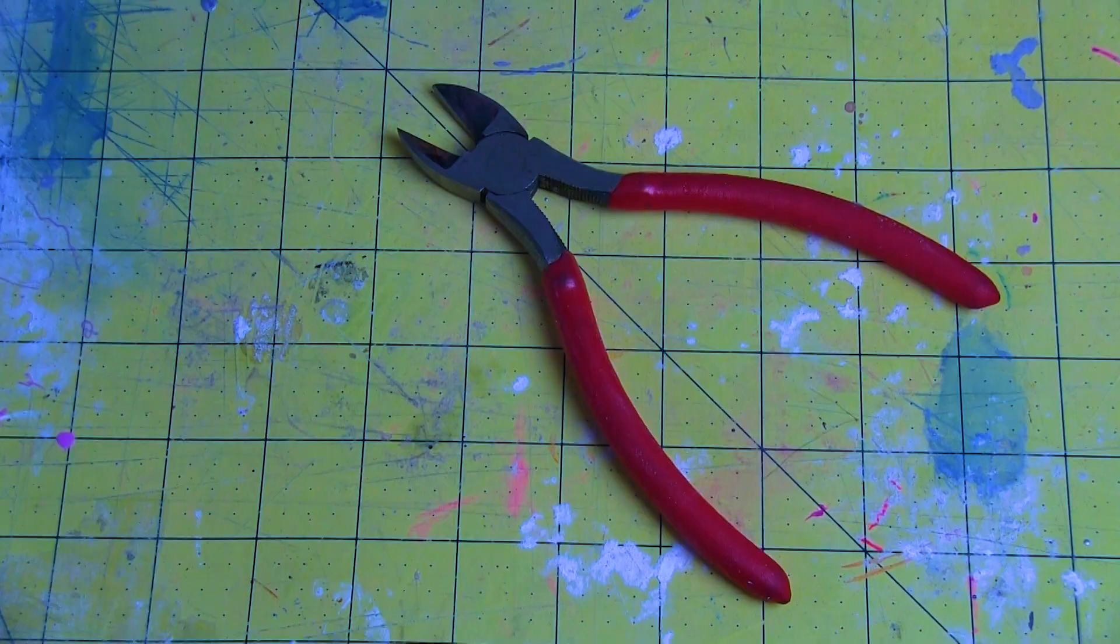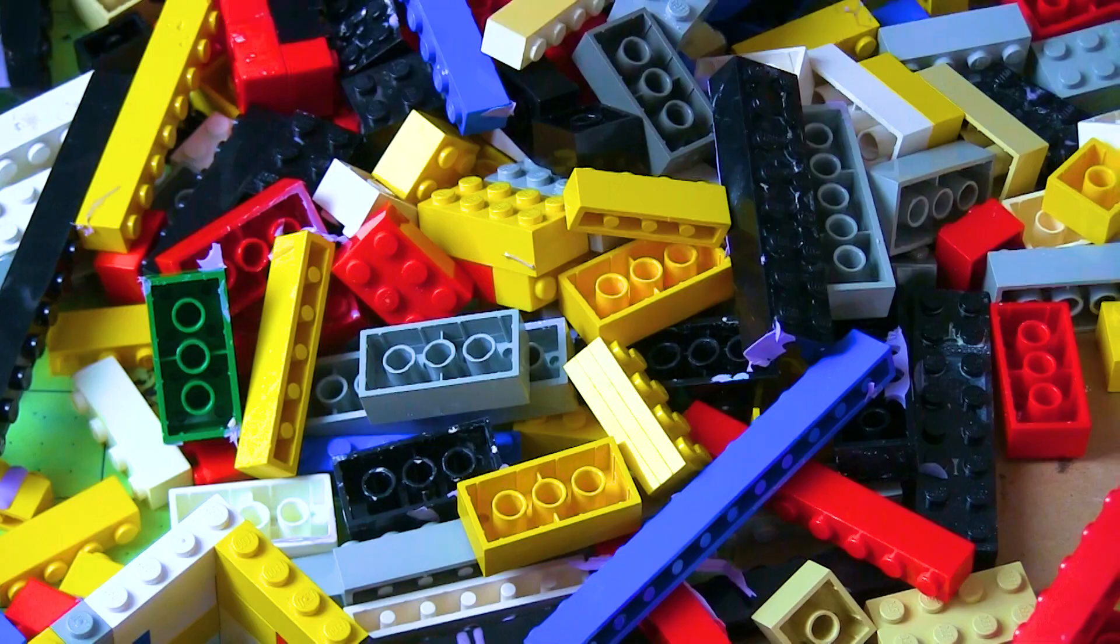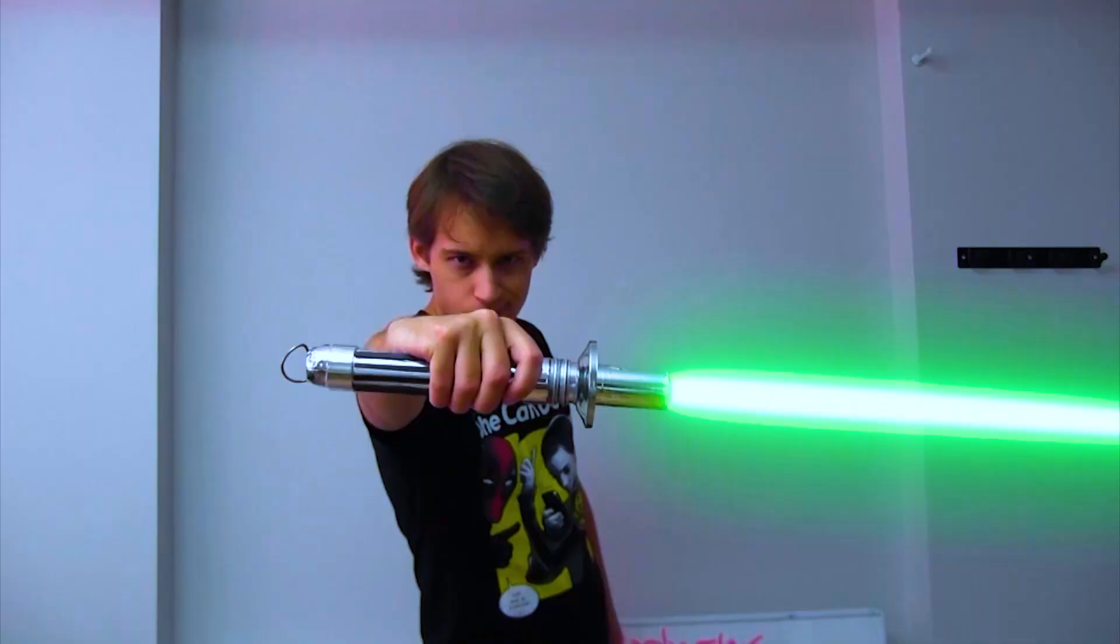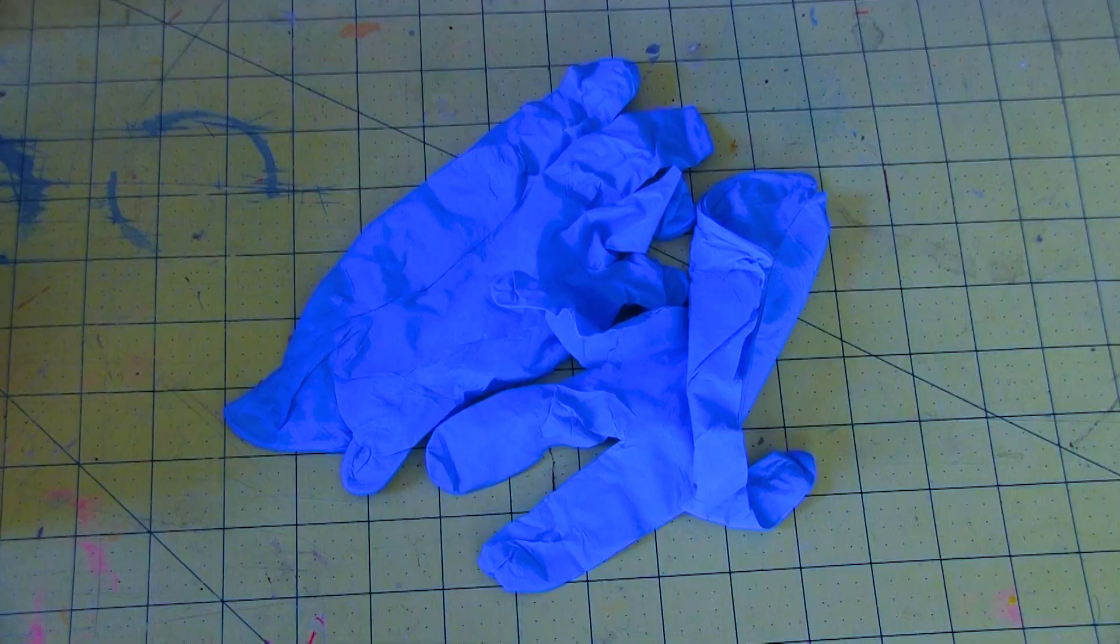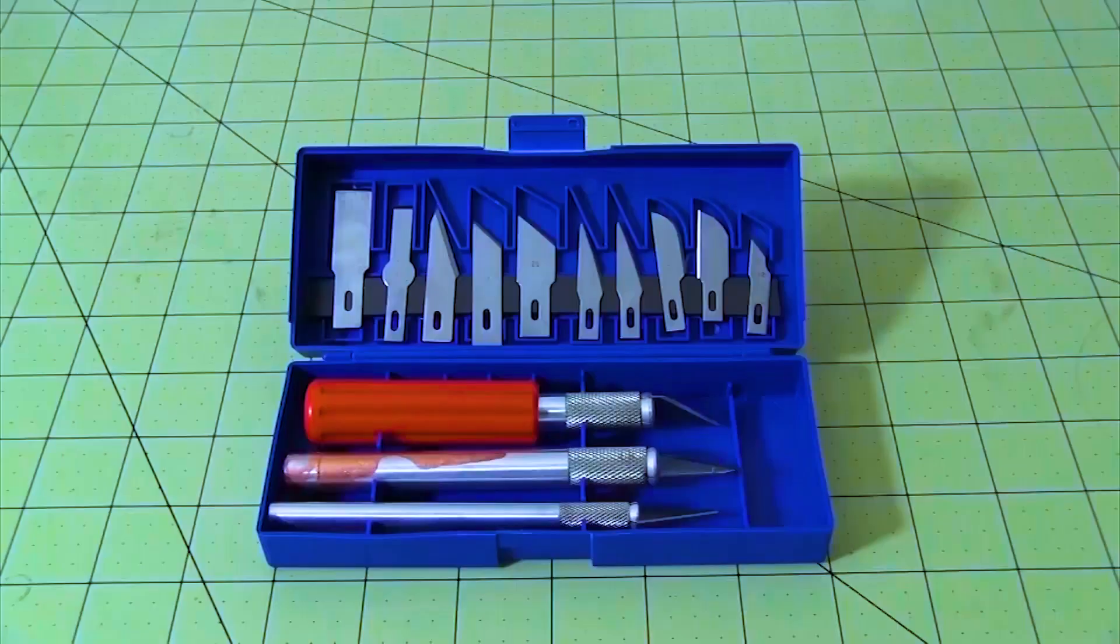Trust me, it'll make sense in a bit, I promise. Just bear with me here. Cutting tools, sanding tools, safety gear, blue gloves - would that fall under safety gear? Scissors, razor pens, and a box cutter.